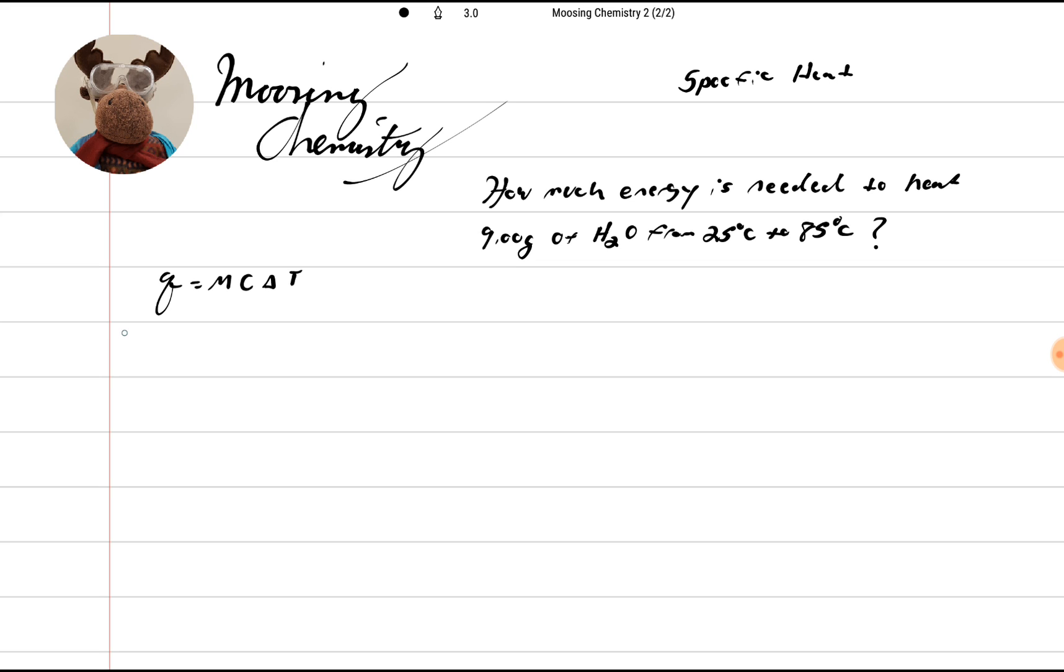First of all, let's figure out what we have. We're looking for Q, so we don't know what that is. We know our mass, which is the M, is 9 grams.